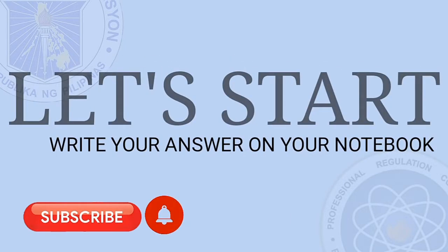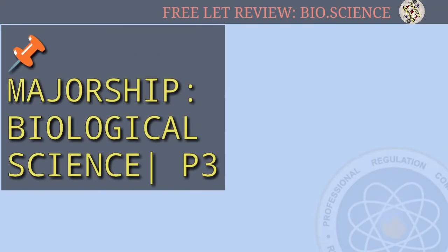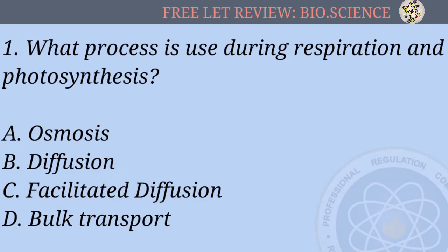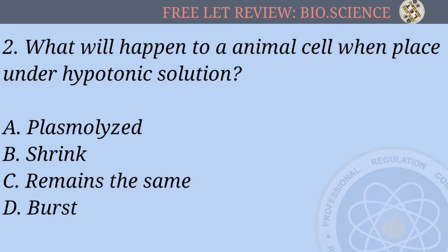Write your answers on your notebook. Question 1: What process is used during respiration and photosynthesis? A) Osmosis, B) Diffusion, C) Facilitated diffusion, D) Bulk transport. Question 2: What will happen to an animal cell when placed under a hypotonic solution? A) Plasmolize, B) Shrink, C) Remains the same, D) Burst.